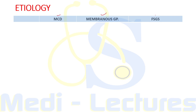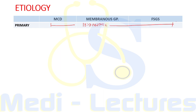Let's discuss the etiology of minimal change disease, membranous glomerulopathy, and focal segmental glomerulosclerosis. When considering etiology, there can be a primary cause where the cause is unknown — it is said to be primary or idiopathic.